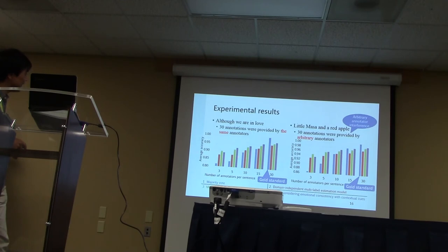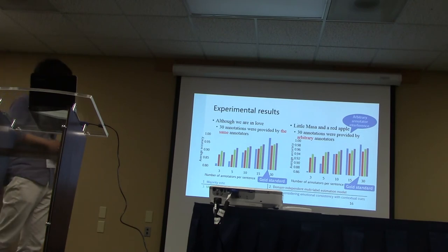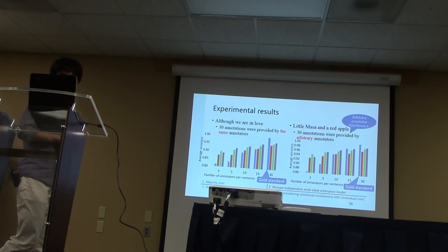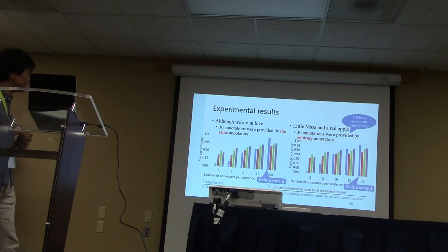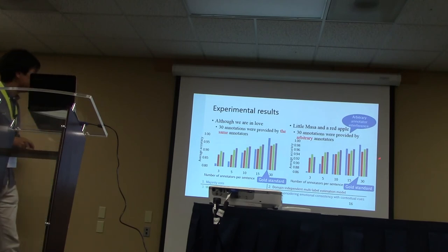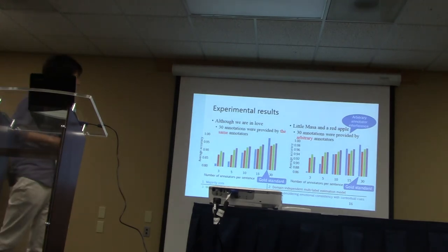Moreover, the model with contextual cues increased fastest and exceeded the model without contextual cues for 5 or more annotators per sentence. The reason is that when the group size was 3, the adverse effect of data sparsity is significant and the annotation quantity is not sufficient for learning the transition distributions over conjoined emotions. However, once the annotation quantity is sufficient, the superiority of the model with contextual cues becomes evident. Finally, none of the models was particularly sensitive to the effect of arbitrary annotator interference in the second narrative.